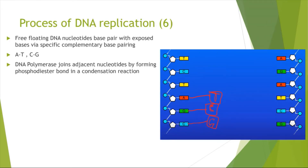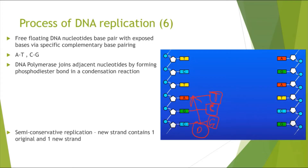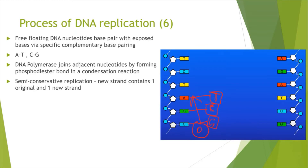DNA polymerase then joins the adjacent nucleotides by forming phosphodiester bonds in a condensation reaction. DNA polymerase joins all the complementary base pairs and forms phosphodiester bonds in a condensation reaction. This forms a new DNA molecule by semi-conservative replication, because the new molecule contains one original strand and one new strand.